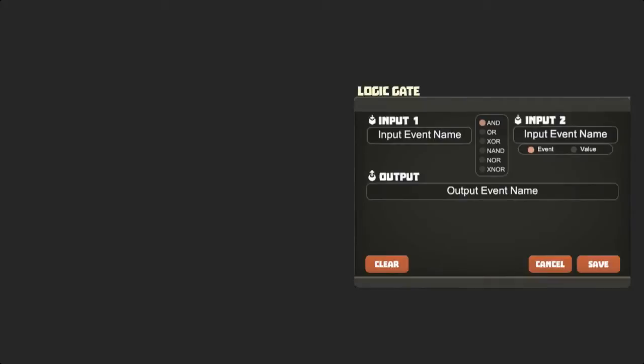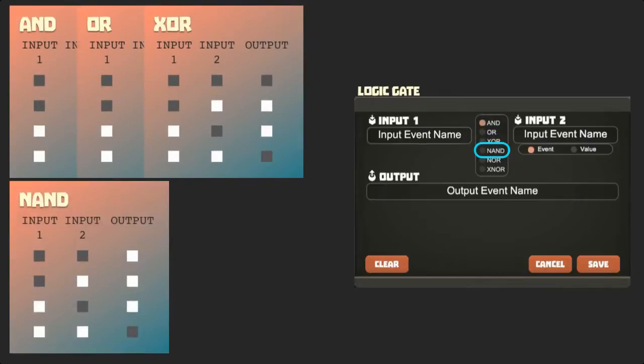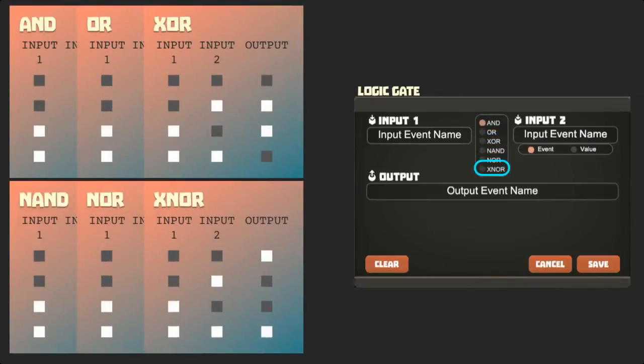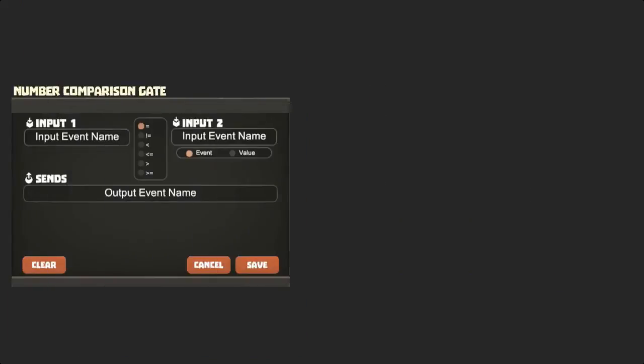To understand how each operation of the logic gate worked, we checked every combination of inputs to see what the outputs would be, and in writing those down, we made truth tables that we can use for reference. Let's do the same thing with the comparator.